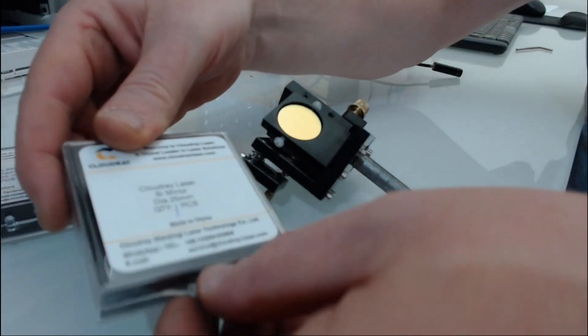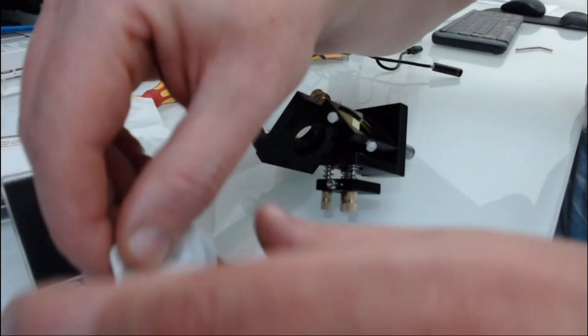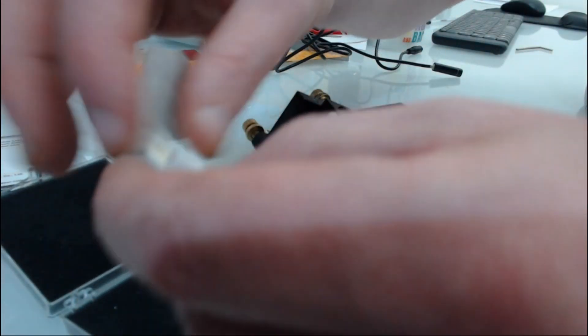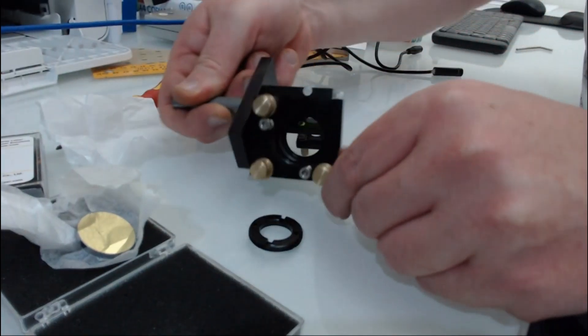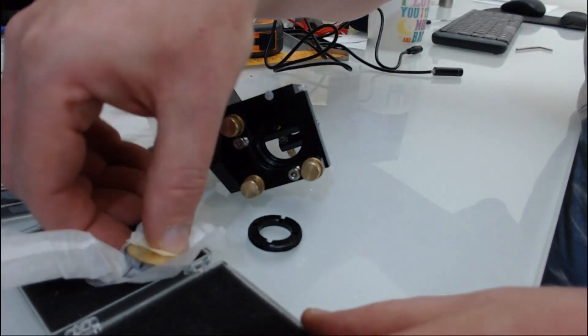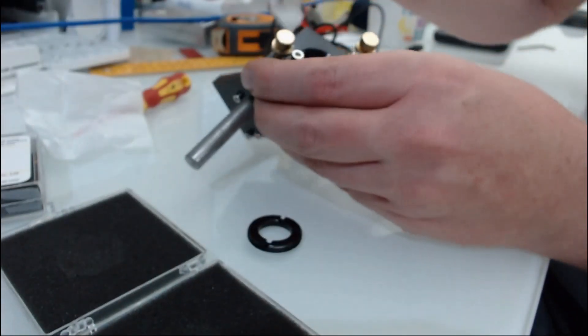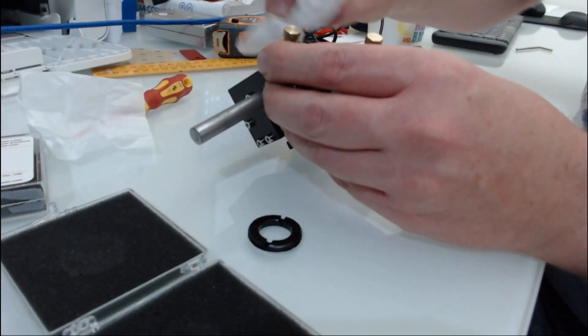So the next mirror I've got is this laser mirror and that will go into the mirror mount. So take the ring out. Again using the tissue, put the mirror in. The mirror will go in face down.